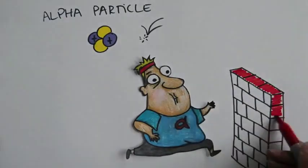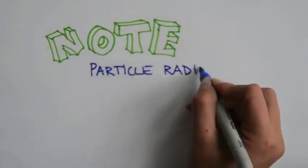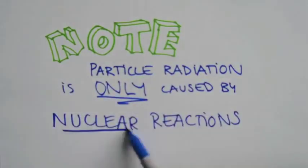Beta particles can travel much further through things than alpha particles. Note, particle radiation is only caused by nuclear reactions.